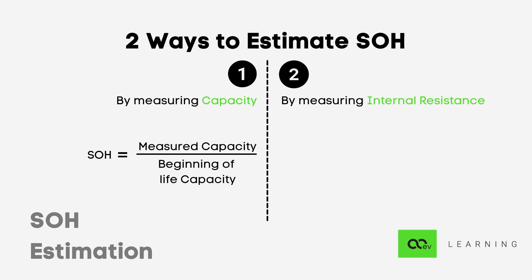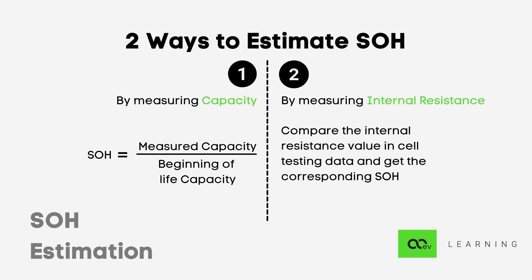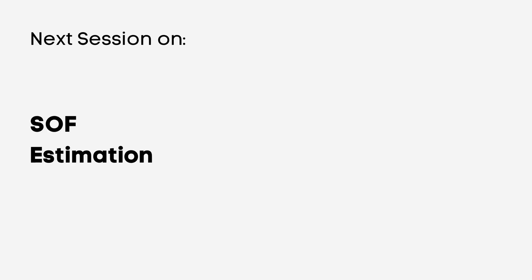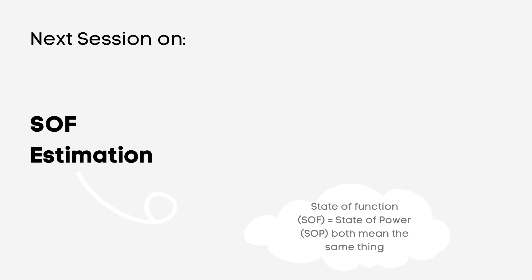The second method uses internal resistance. As battery electrodes deteriorate, their capacity to deliver current reduces. The difference between the internal resistance of a fresh cell and a used cell gives us the SOH. Cell testing data maps milliohm resistance to SOH — for example, 20 mΩ corresponds to 100% SOH, and 30 mΩ corresponds to 80% SOH. In the next topic we will look at state of power estimation.